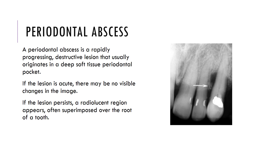A periodontal abscess is a rapidly progressing destructive lesion that usually originates in the deep soft tissue periodontal pocket. Clinically it may appear as a swelling in the gum, but on radiograph it is difficult to diagnose specifically as a periodontal abscess. If the lesion is acute, there may be no visible changes on radiograph at all, but if the lesion persists, a radiolucent region appears, often superimposed over the root of the tooth.